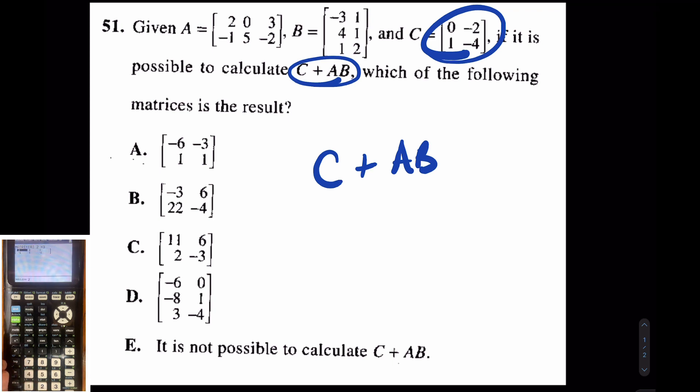That's matrix A. Now I want matrix B, so second matrix, edit in matrix B. Matrix B is a 3 by 2, and that's negative 3, 1, 4, 1, 1, 2. A little tough to record this and put them in at the same time, but I'm trying my best.